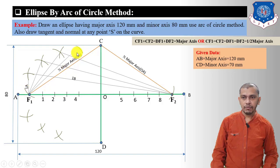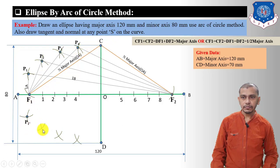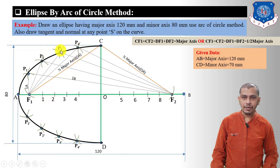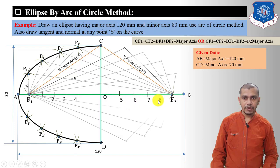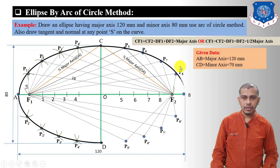Measure A to 4 on the compass and give an arc from focus point F1 on both sides of the major axis; measure B to 4 and give an arc from F2 on both sides. Mark all these points P1, P2, P3, P4, P5 and P1', P2', P3', P4'. Draw the freehand curve through these points to get a half ellipse. For the other half, measure A to 5, 6, 7, 8 from F1 and B to 5, 6, 7, 8 from F2, mark all intersection points, and draw the freehand curve through them. This completes the ellipse by the arc of the circle method.